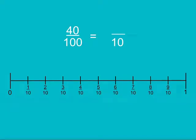We can also convert the other way by doing the opposite of multiplication. So if I want to write 40 hundredths as tenths, I can divide by 10 to get 4 tenths. We can plot this on the number line to check our answer.